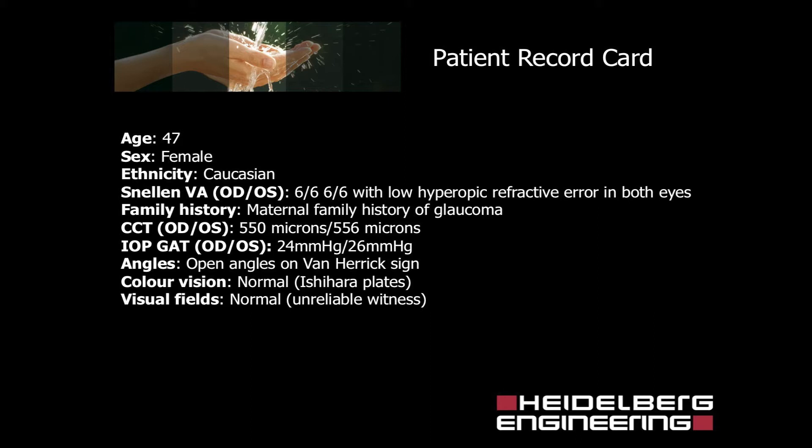Central corneal thickness is 550 microns in the right eye and 556 microns in the left eye. Intraocular pressure measured with Goldmann Applanation Tonometry is 24 mmHg in the right eye and 26 mmHg in the left eye. Angles are open on Van Herrick sign.